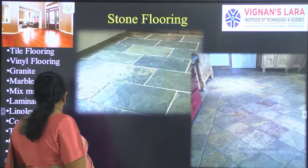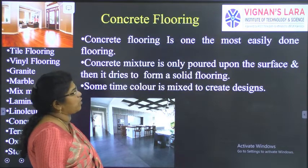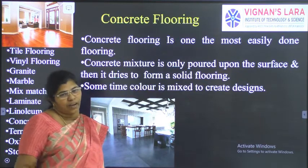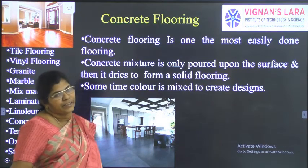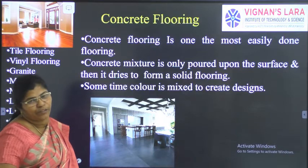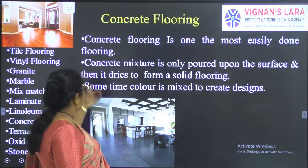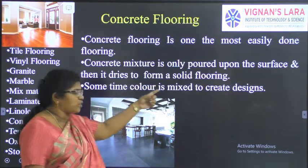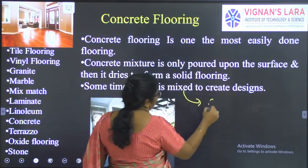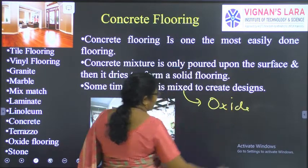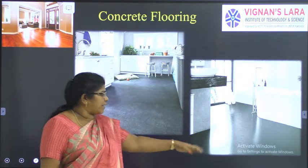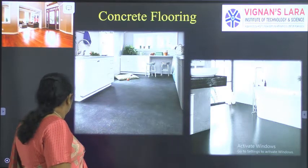The next type is concrete flooring, which is most common in older houses. Above the concrete floor, a finishing is applied with cement paste mixed with water to give a very good smooth finish. Sometimes color is mixed into the concrete to create a design — this is considered oxide flooring. The red oxide flooring is one such example and it is very durable and can be polished to get a very good surface.